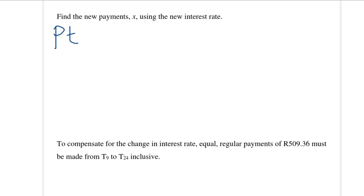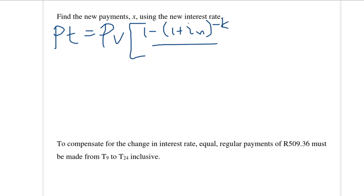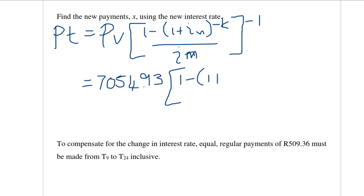To find the new payments from t9 onwards, we use the outstanding balance at t8 as the value of a new loan with the new interest rate of 21%. The rate 0.0175 is 21% divided by 12. We have 16 remaining payments — starting the first payment at t9, you take 24 minus 8 to get the remaining number of payments.